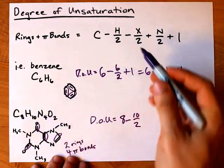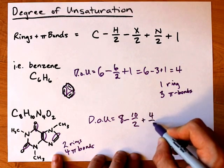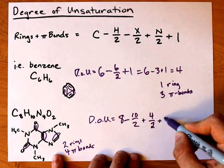There are no halogens, so I don't have to worry about that. But there are nitrogens this time, so I will add 4 over 2. Then I will also add 1.